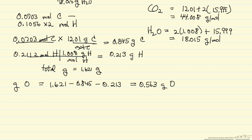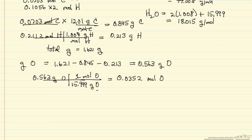So I calculate the grams of oxygen, and now I can take the grams of oxygen and convert this to moles of oxygen: 15.999 grams of oxygen per 1 mole of oxygen. So now I have the number of moles of oxygen. We make a list of the elements: carbon, hydrogen, oxygen, and the number of moles. So carbon 0.0703, hydrogen is 2 times 0.1056, or 0.2112 moles of hydrogen, and we just calculated the number of moles of oxygen, 0.0352.